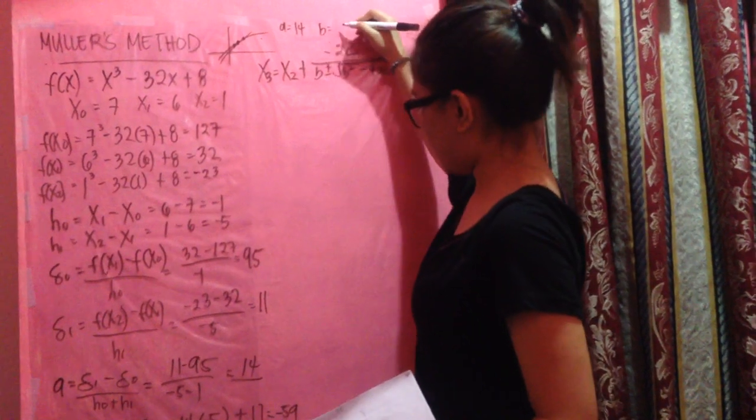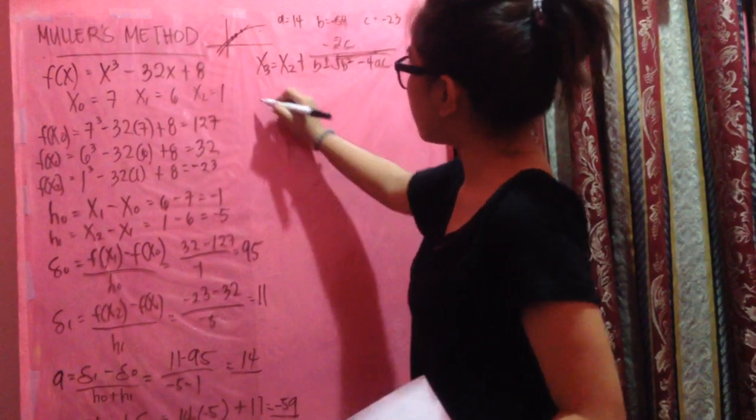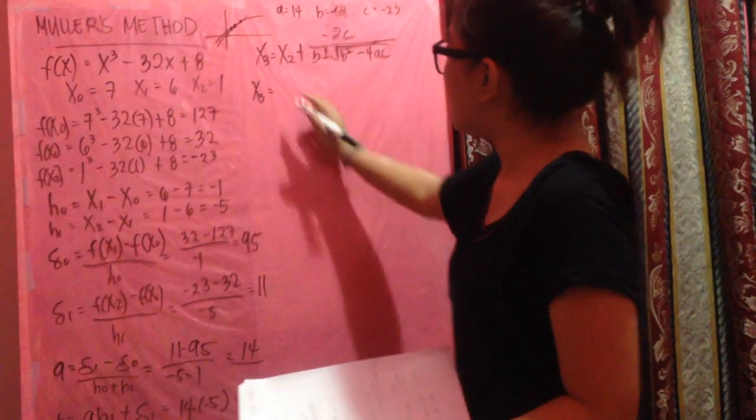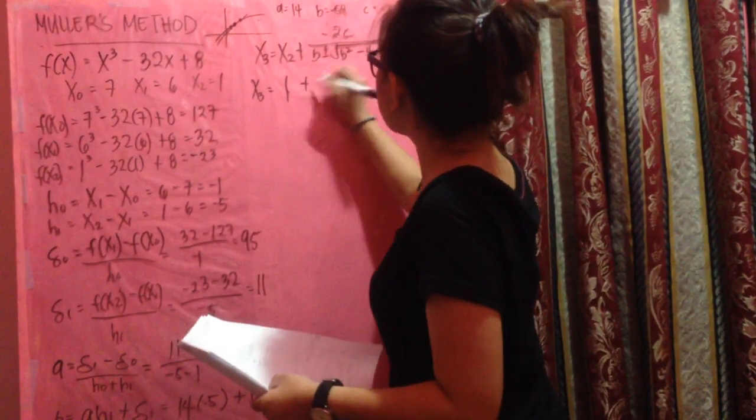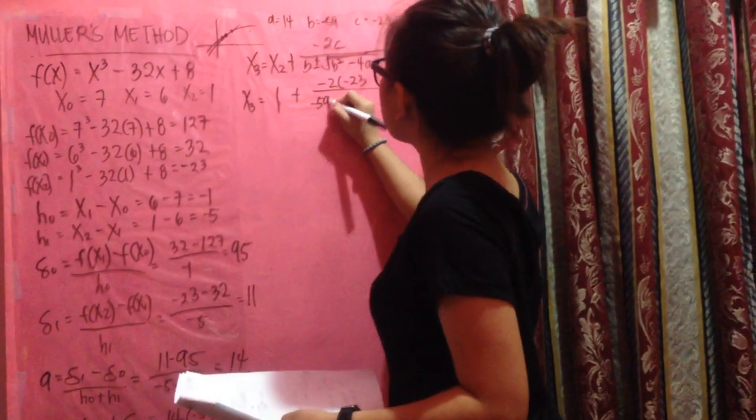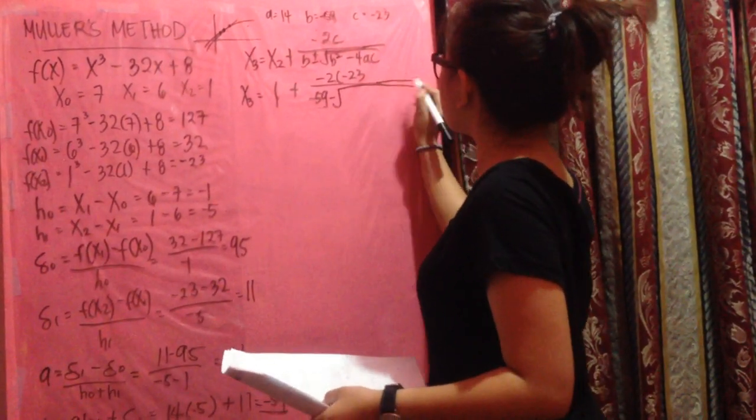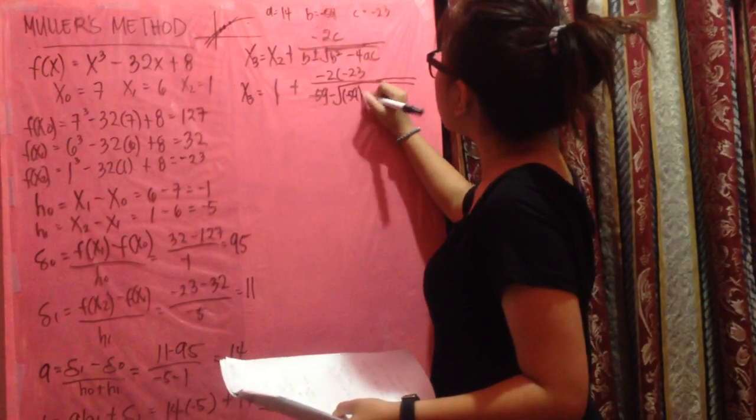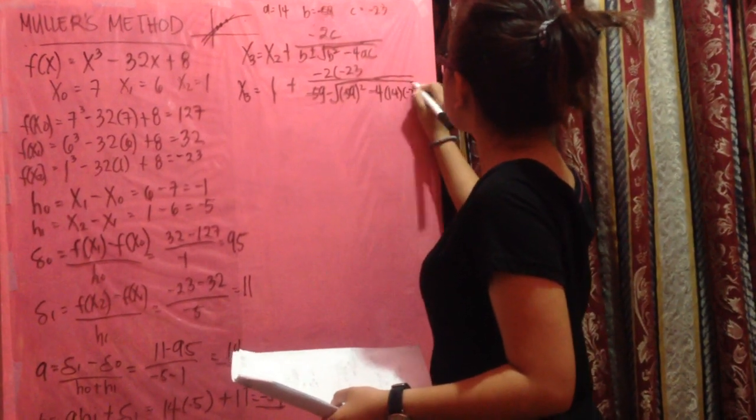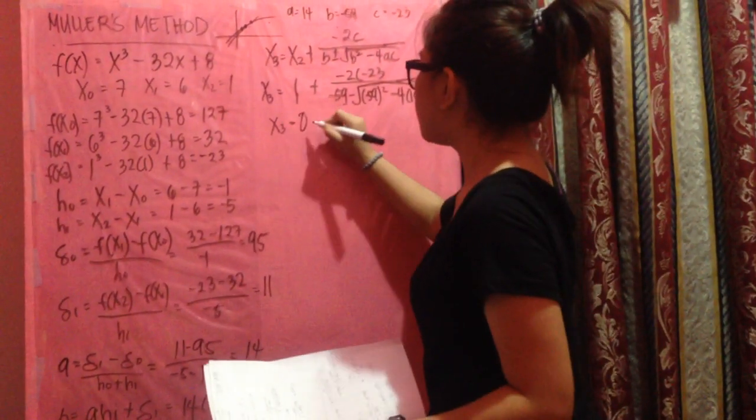Substitute x₂, 1, plus negative 2C, negative 23, over B, negative 59, minus square root of B, negative 59 squared, minus 4 times 14 times negative 23. We have the value for x₃: 0.6408.